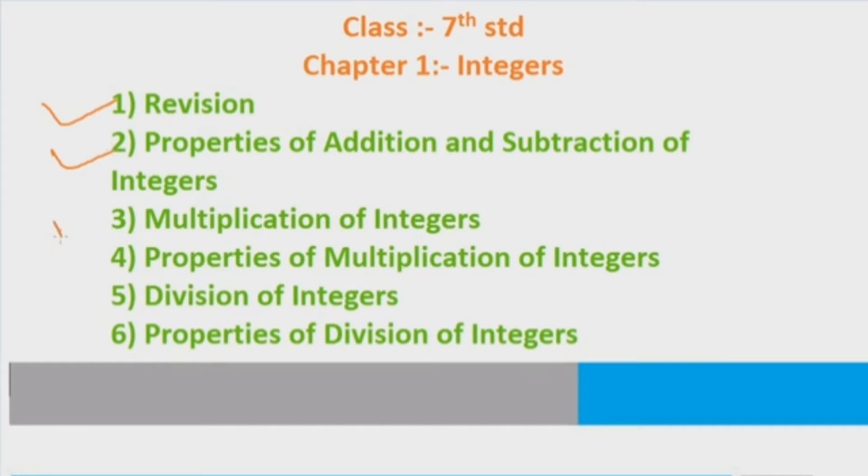Third is multiplication of integers. How do we do multiplication of integers? We will learn that too. After that, properties of multiplication of integers. When we do multiplication of integer numbers, some properties apply. We will learn those properties too.